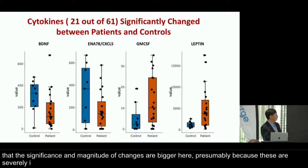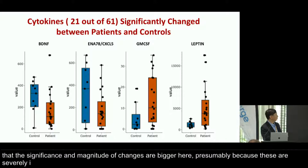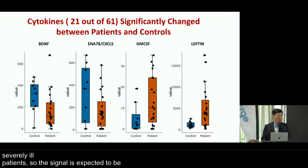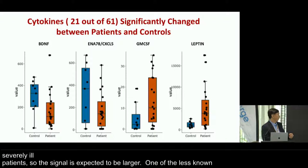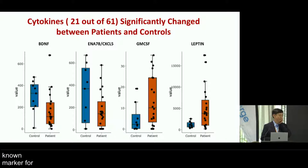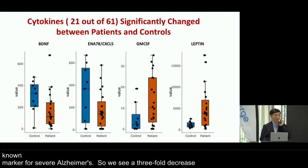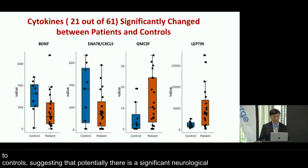One potentially less reported finding is the cytokine brain-derived neurotrophic factor (BDNF), which is a well-known marker for neurological diseases such as severe Alzheimer's. We see about a three-fold decrease of this cytokine in patients compared to controls, suggesting that there is potentially a significant neurological component in this disease.